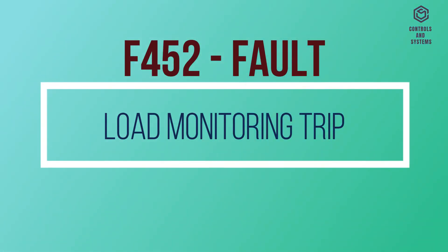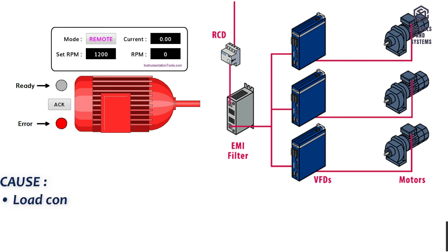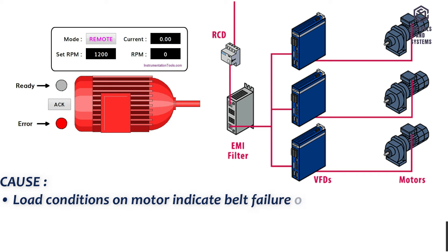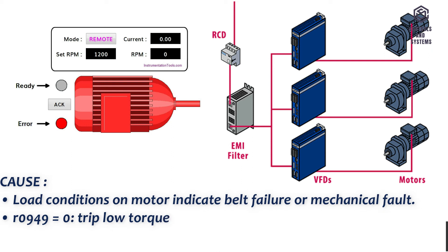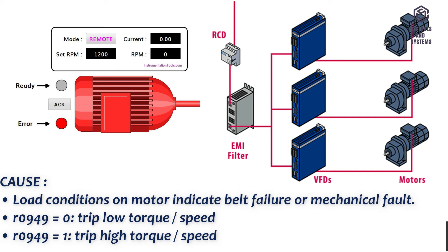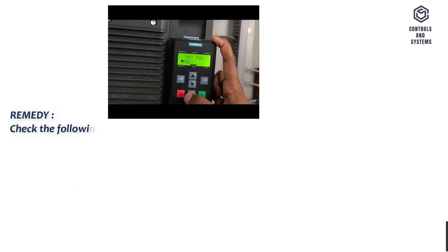F410 Fault: load monitoring trip. Cause: load conditions on the motor indicate belt failure or mechanical fault. R0949=0: under-torque speed. R0949=1: trip high torque speed.